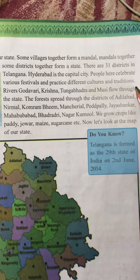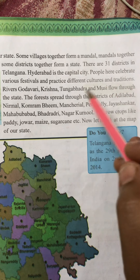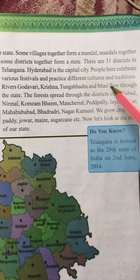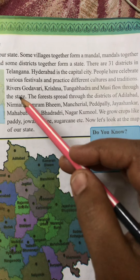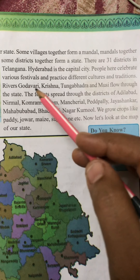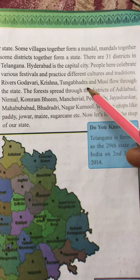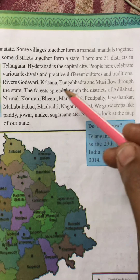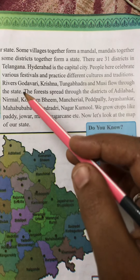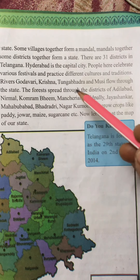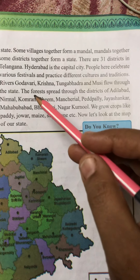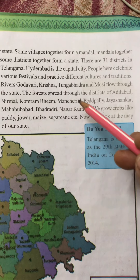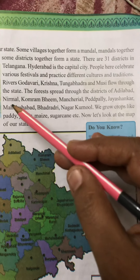Different cultures and traditions fall under our state. The rivers Godavari, Krishna, Tungabhadra, and Musi flow through the state. The forest spreads through the districts of Adilabad and nearby areas.